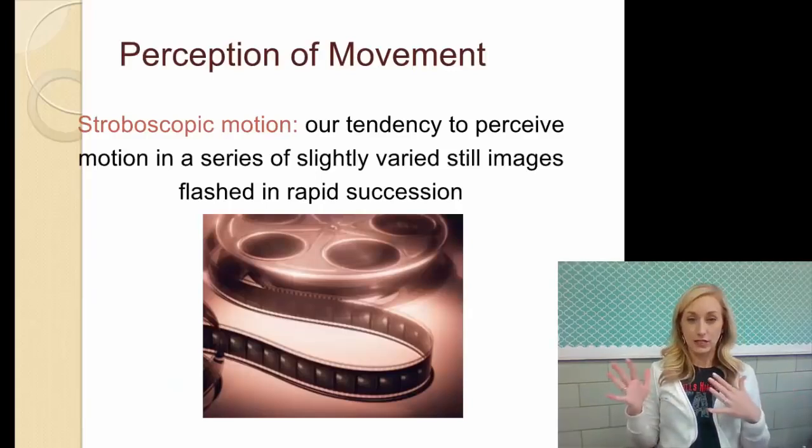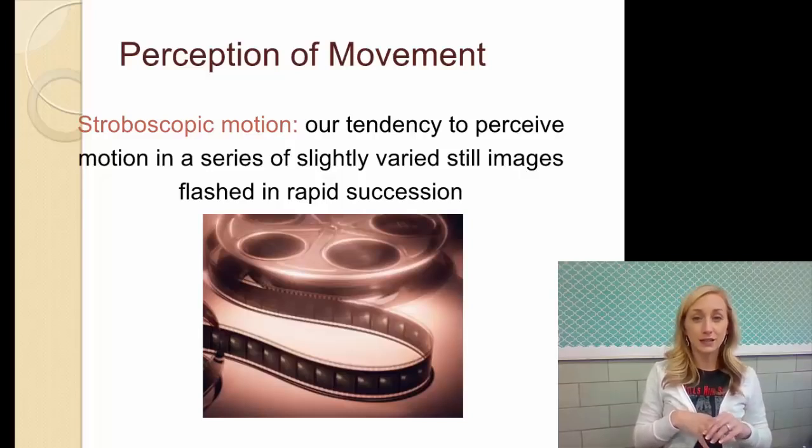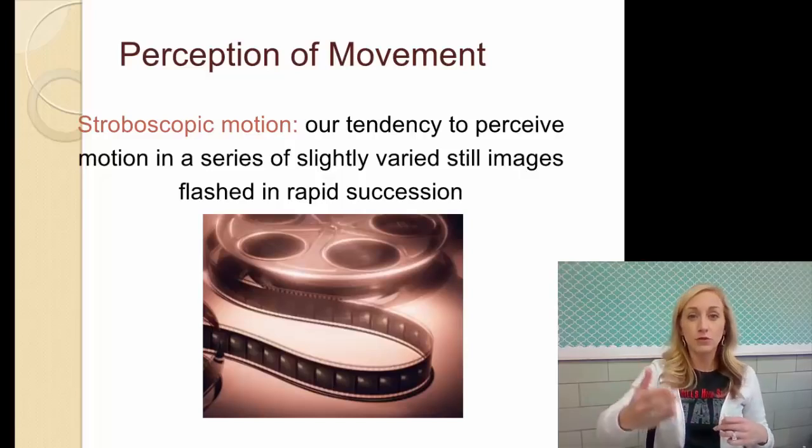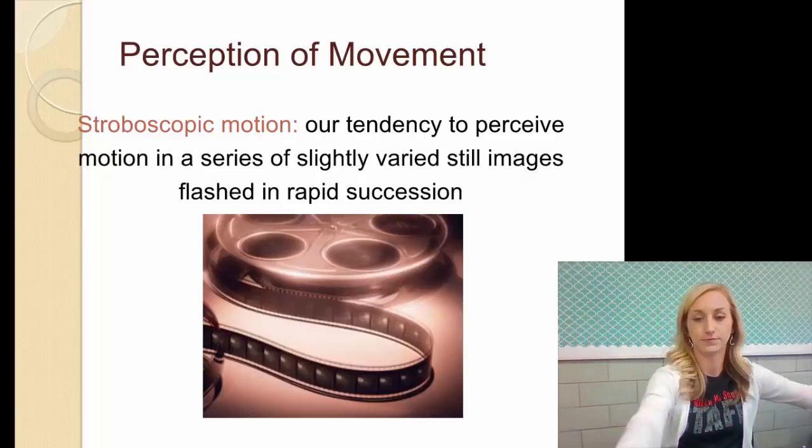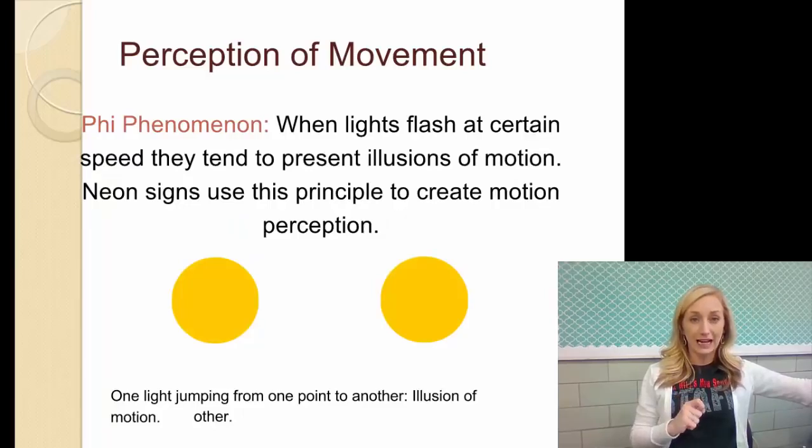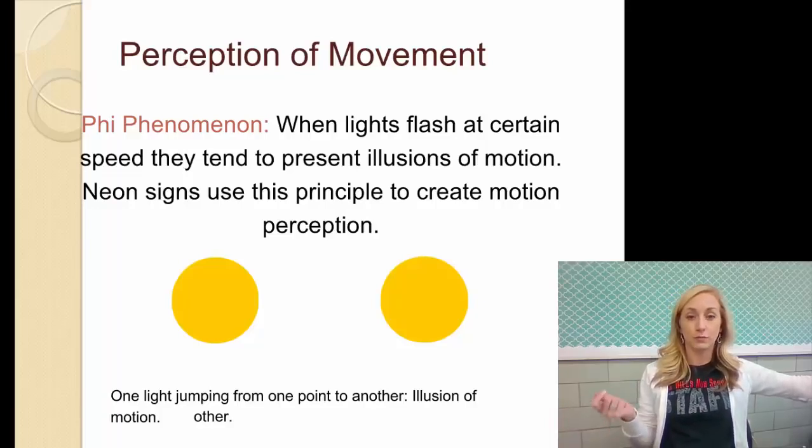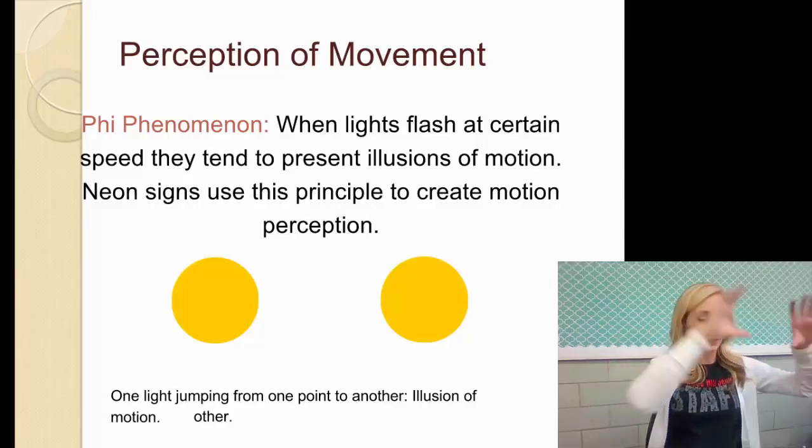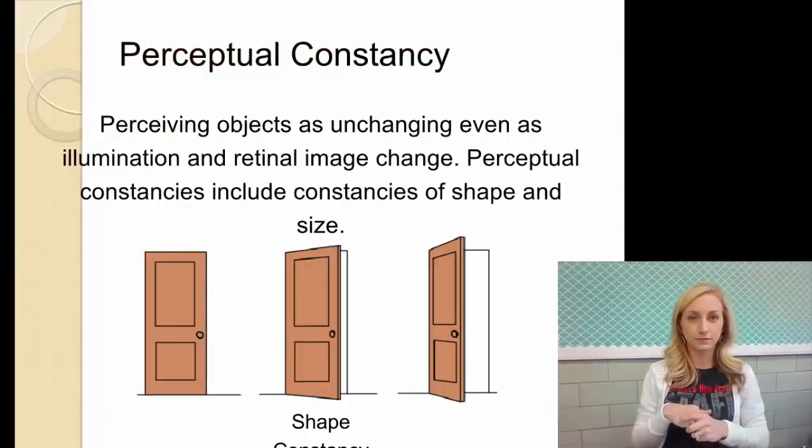So perception of movement, so different from gestalt, different from depth perception. Let's talk about perception of movement. We have some vocab terms here. Stroboscopic motion is our tendency to perceive motion in a series of slightly different still images that are flashed rapidly in succession. So this is a flip book, or even a movie. It's a ton of still images that are flashed so quickly and are so similar that we perceive movement. The phi phenomenon, this is when lights flash at certain speed, and they tend to present illusions of motion. So neon signs use this principle to create motion perception, like an arrow, that it appears to move. Or, like, the Christmas lights set to music. If you have a bunch of Christmas trees and it goes back and forth, it appears that the tree is almost moving.